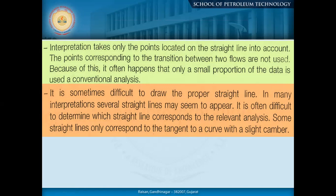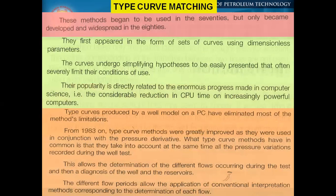In a fractured reservoir, initially the flow is from the fracture, but once you start analyzing it you may get some transition and then again a straight line. During that particular time there may be difficulty in analyzing or correlating something. Several straight lines may seem to appear, and it is often difficult to determine which straight line corresponds to the relevant analysis.